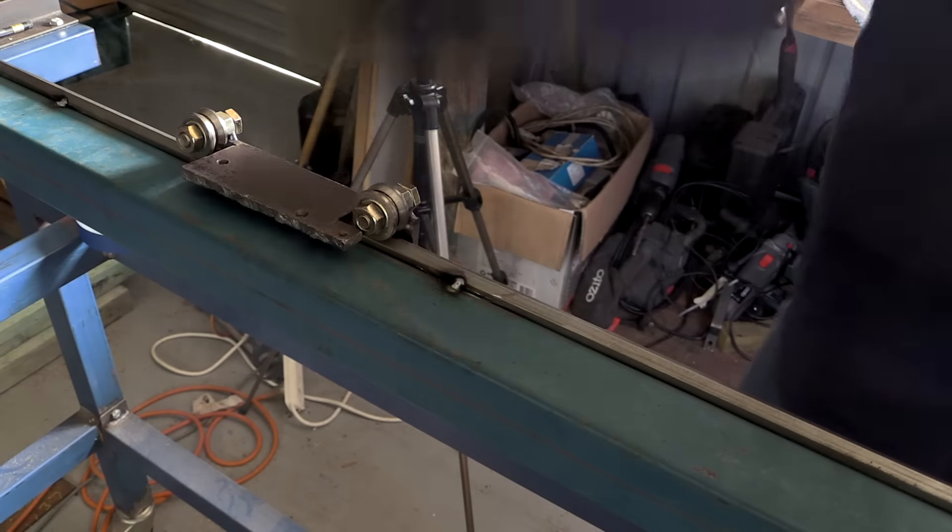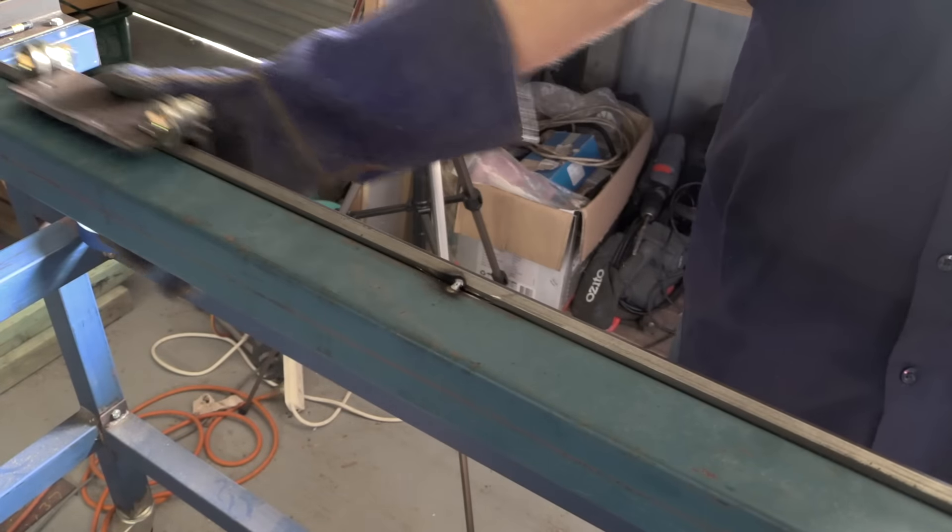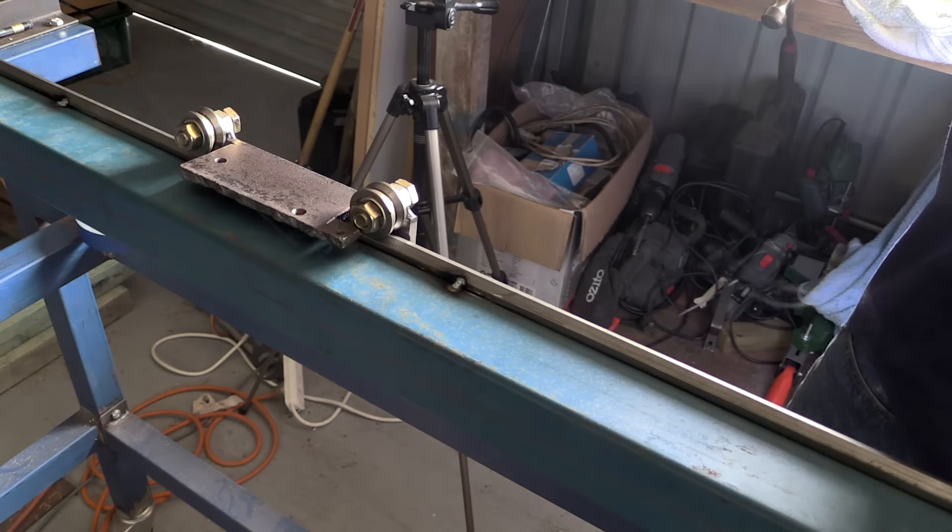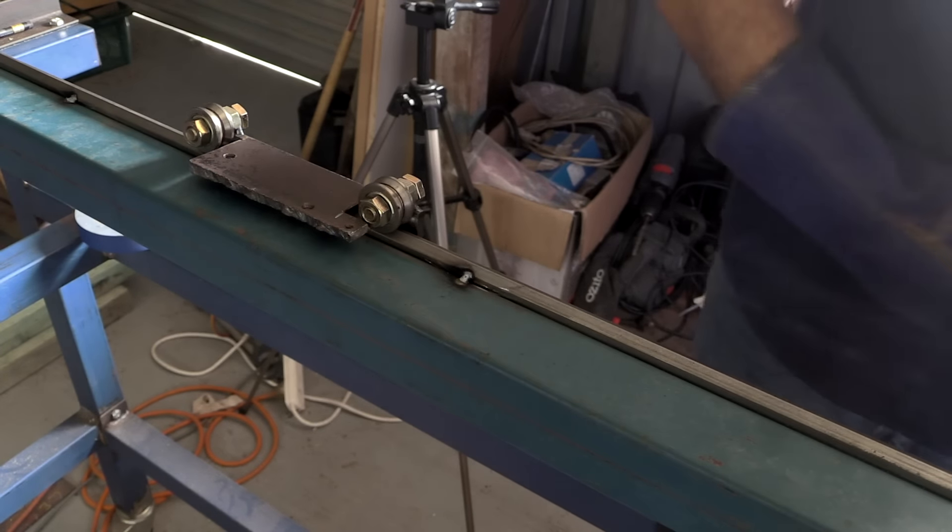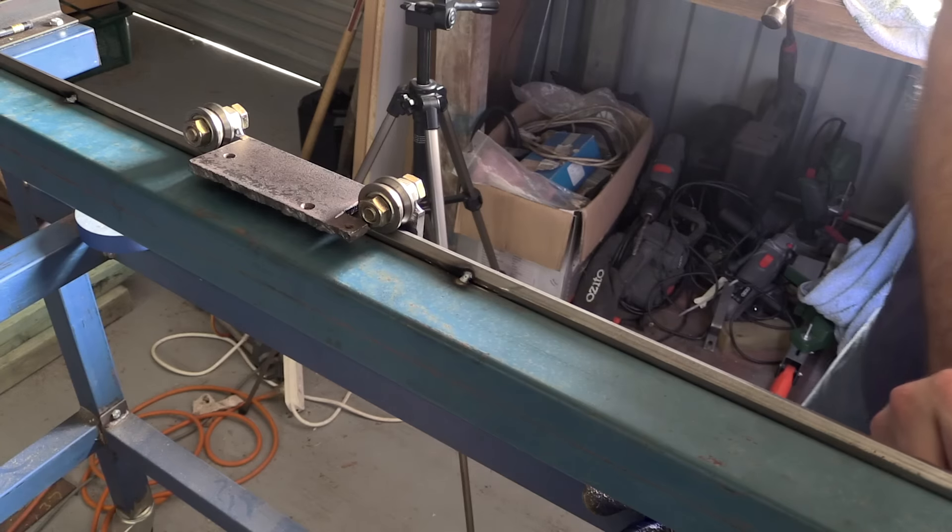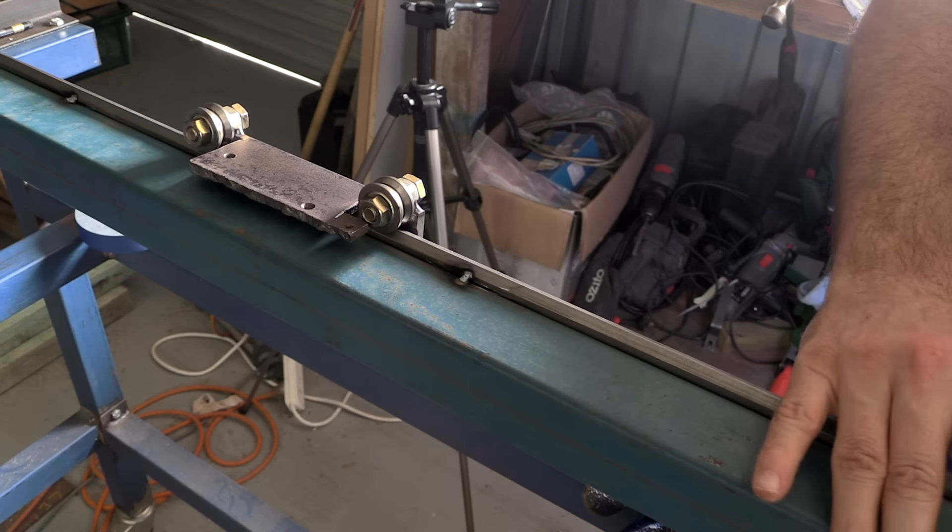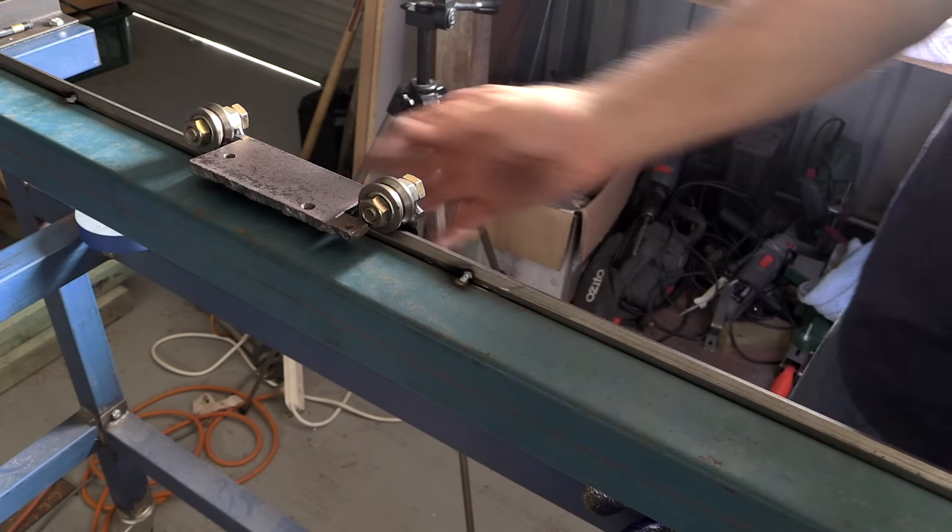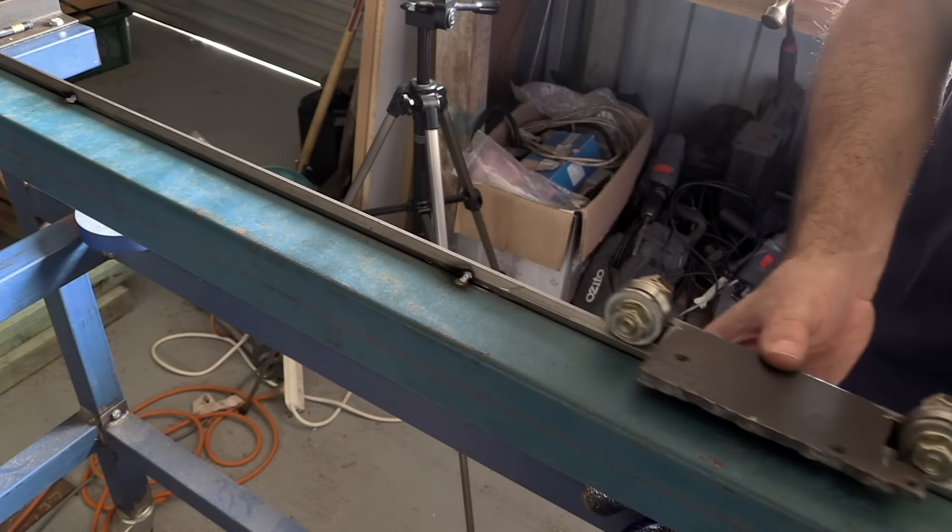But the steel I've got has a lot of mill scale on it and would need a fair bit of prep work. This hex bar is actually really nice—the surface quality is really, really good, so I'm hoping this will do the job for me.